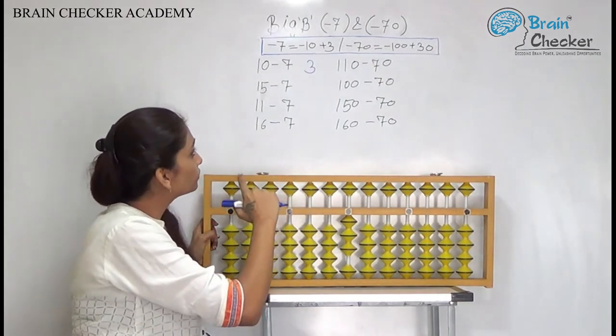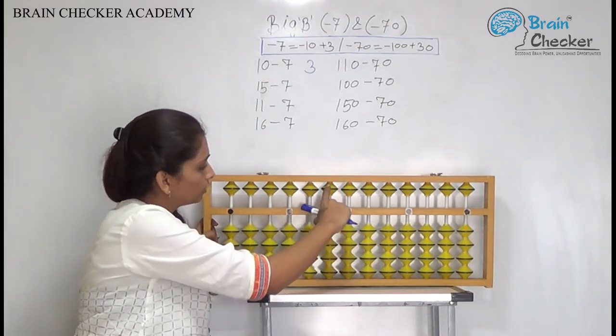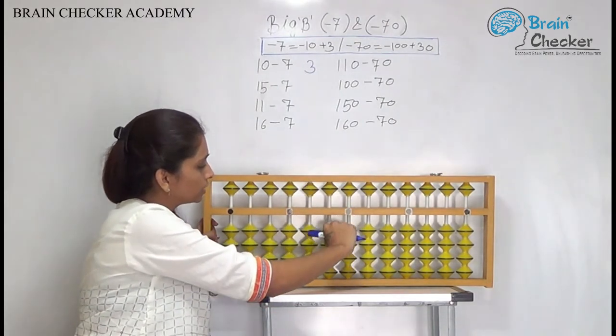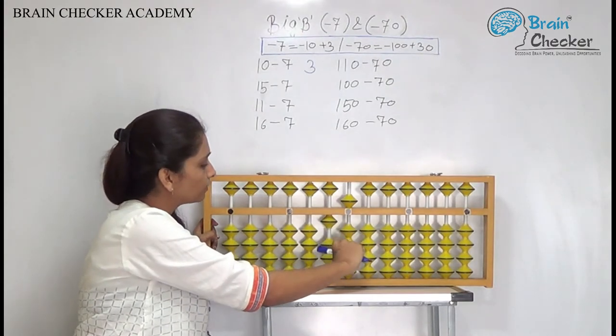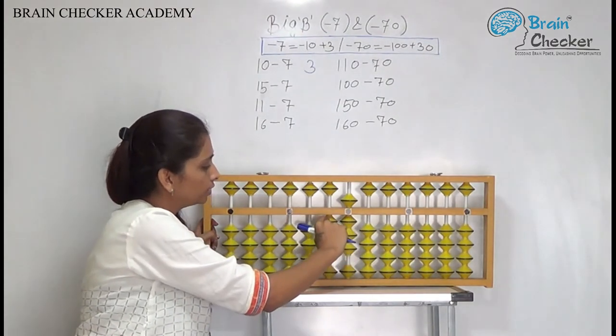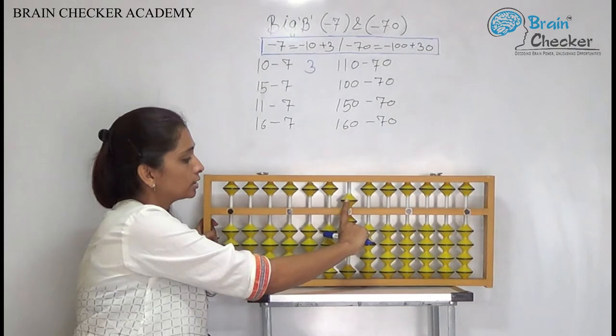The next is 15 minus 7. So again 15 we will first take 10, 5, 15 and to add less 7 what we will do? Add 3 less 10. So the answer is 8.